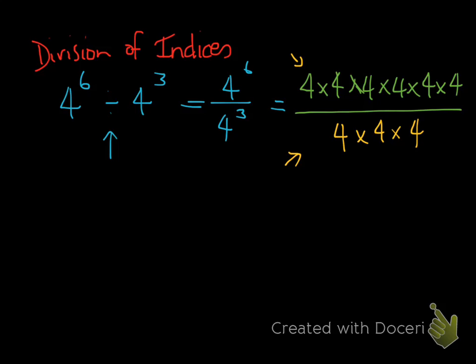Now, as we know with division — when we have fractions, and fractions are divisions — we know that when we have a fraction like 2 over 2, we can cancel it out and it equals 1. Whenever we have a numerator and a denominator that are identical, we can cancel those two out and they equal 1. We can apply this rule here because we've got the same value on top and bottom — a 4 here and a 4 here. So we can cancel those two out; they become 1. We repeat this process for every other 4 at the top and at the bottom until we run out of 4s.